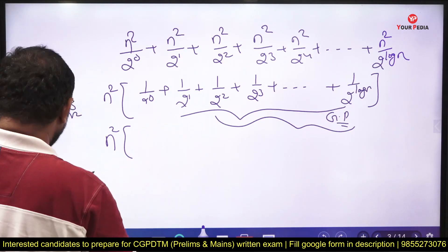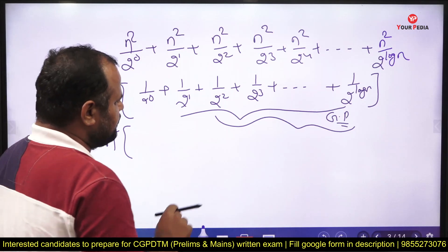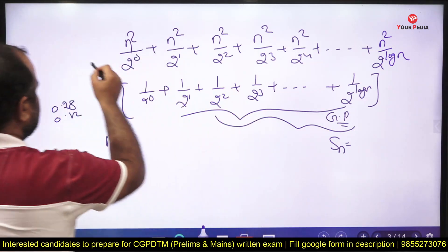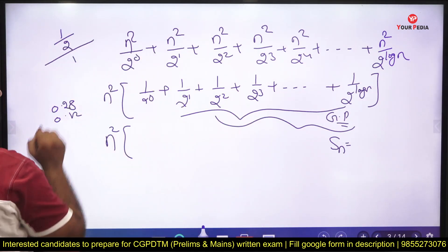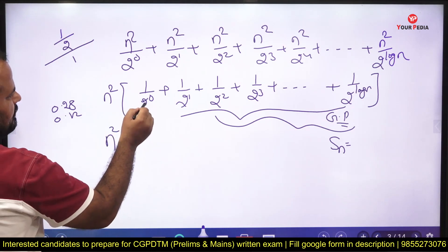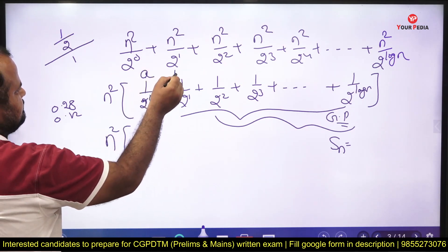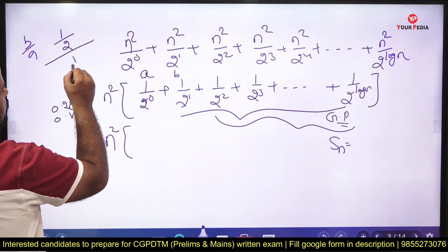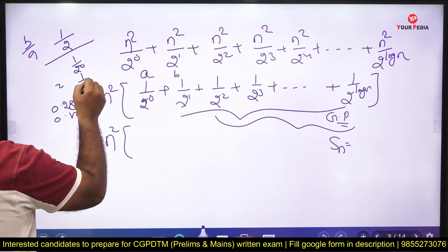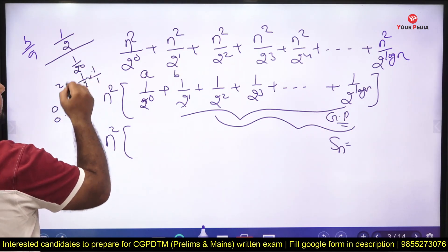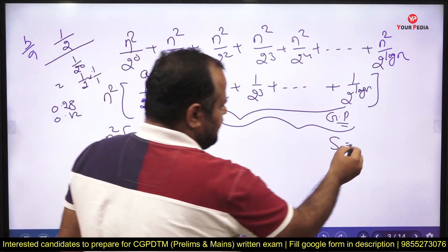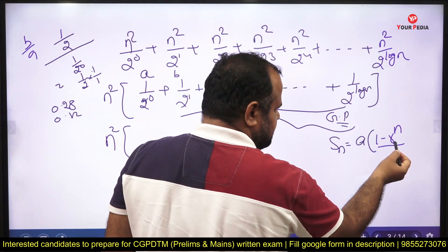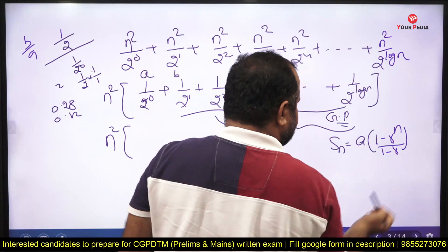To solve it descriptively using the GP sum formula: the ratio r is (1/2) ÷ 1 = 1/2, which is less than 1. The GP sum formula is a·(1 − rⁿ)/(1 − r), where a is the first term (= 1), r = 1/2, and the total number of terms is log n.